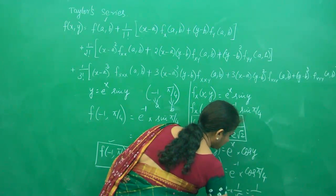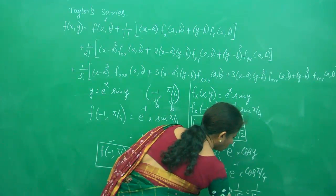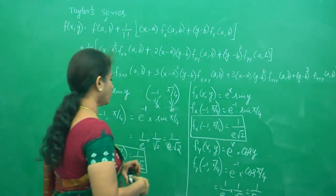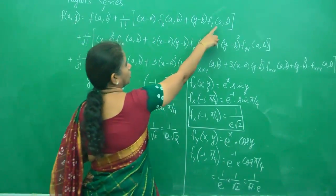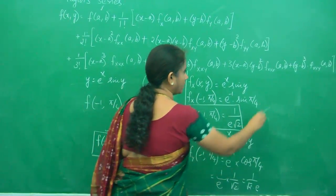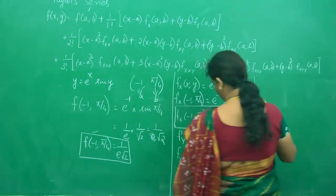So this is again 1/e times 1/√2, which is 1/(e√2). So we have calculated this term also. It is ready with us now.